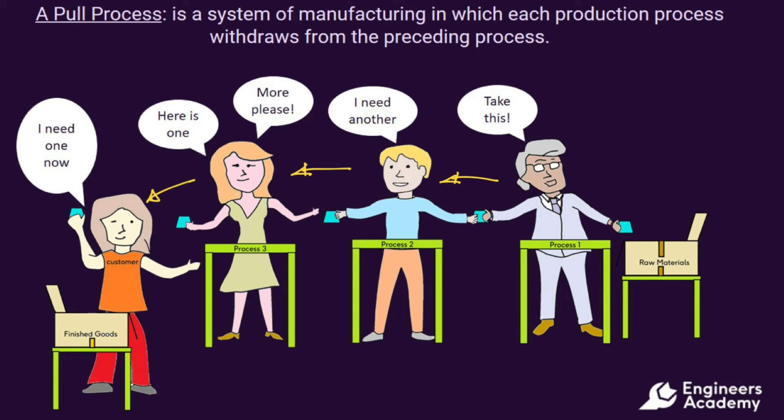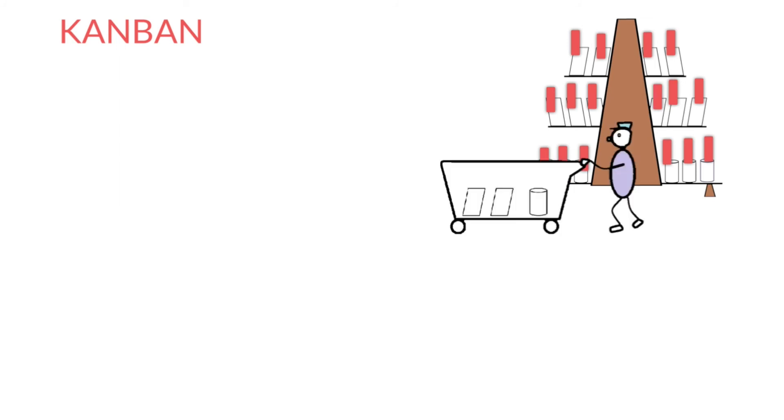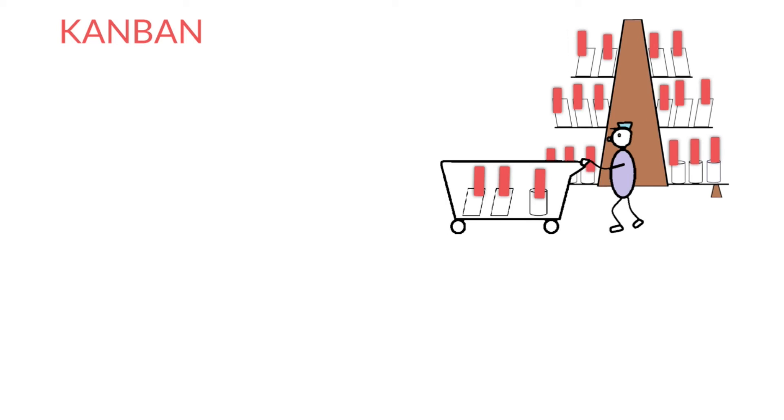A pull process requires trigger signals for control and this is provided through the application of Kanbans. Consider a supermarket shelf which has products on it with cards attached to each product. When a customer takes a product, they take the card with it. The cards have product identifier details on them relating to the products to which they are attached.